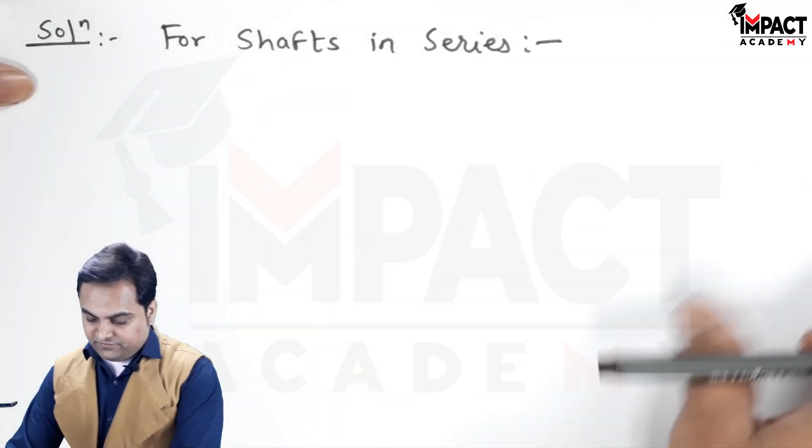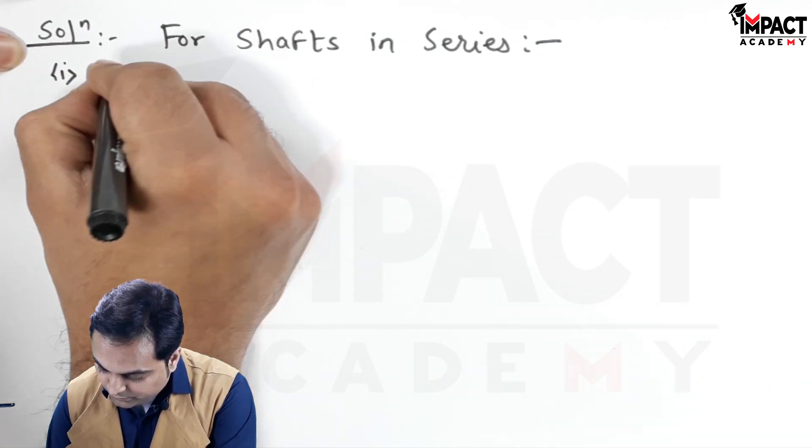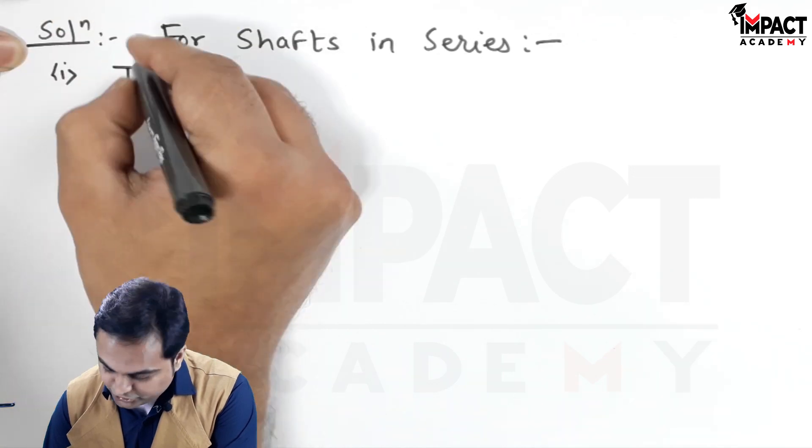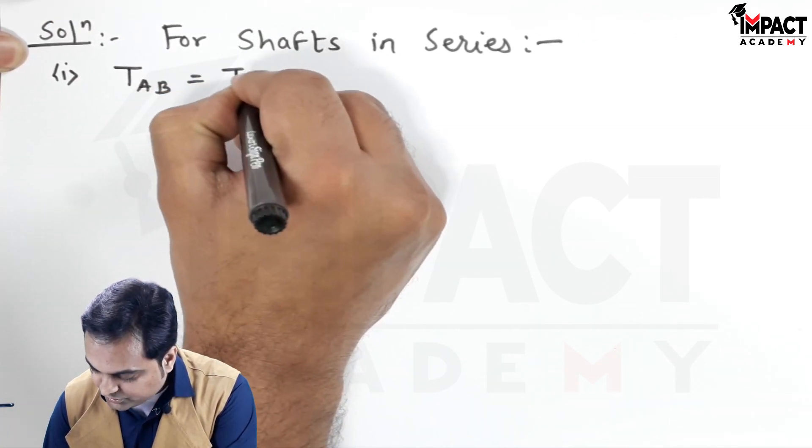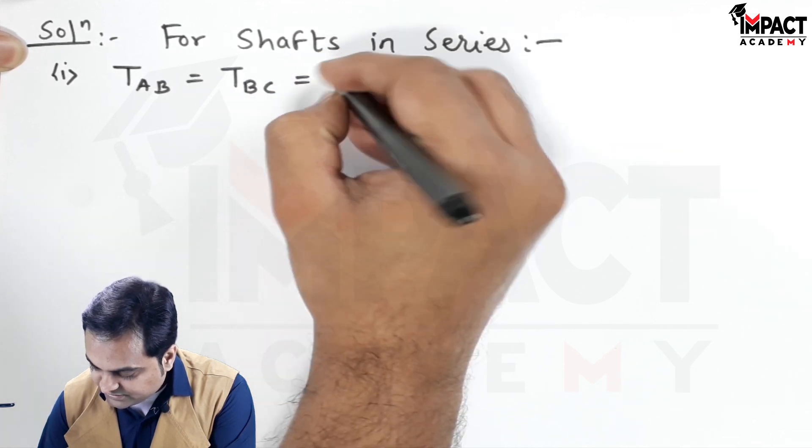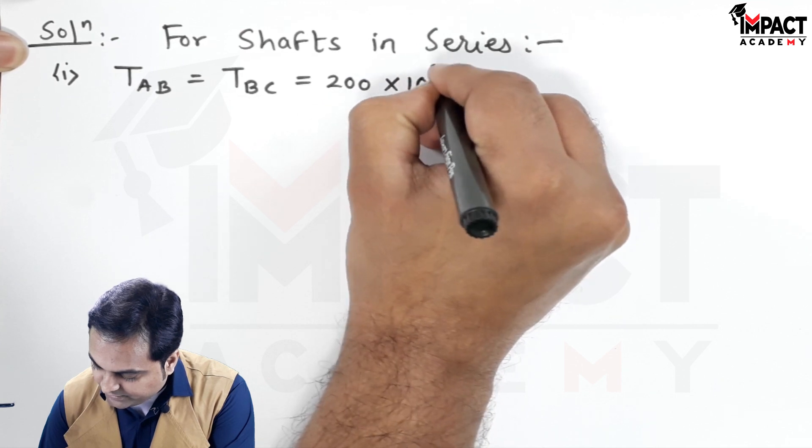For shafts in series, the first condition is: torque in portion AB equals torque in portion BC, which equals the given value of 200×10³ N·mm.